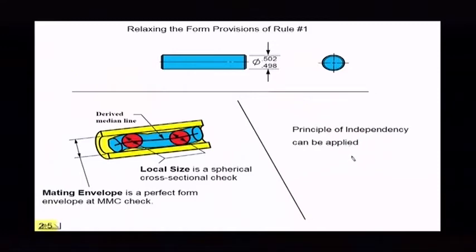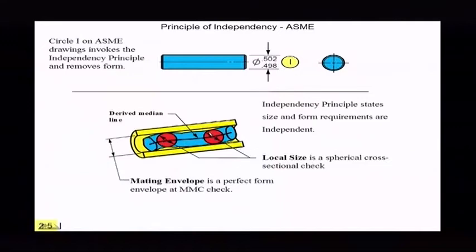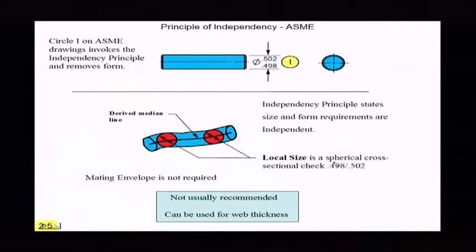Now what we've done in the 2009 standard, we've added another method, and you could apply the principle of independency. So let me talk about the principle of independency. That's new for the 2009 standard. And what it is, circle I. And when you put a circle I next to it, it states that the size and form requirements are independent. So remember a little while ago that I showed you we had the local size and the mating envelope? Well, if you put the circle I, what it does is it eliminates the mating envelope. We're not looking at form anymore. All we have is a local size and that just checks spherical cross sections. So now the form is not controlled.